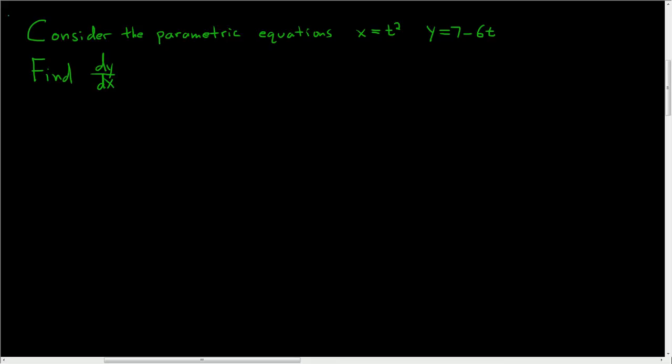We are given some parametric equations, x equals t squared and y equals 7 minus 6t. And we're asked to find dy dx.